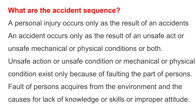Question: What are the accident sequences? Answer: 1. A personal injury occurs only as the result of an accident. 2. An accident occurs only as the result of an unsafe act or unsafe mechanical or physical conditions, or both.